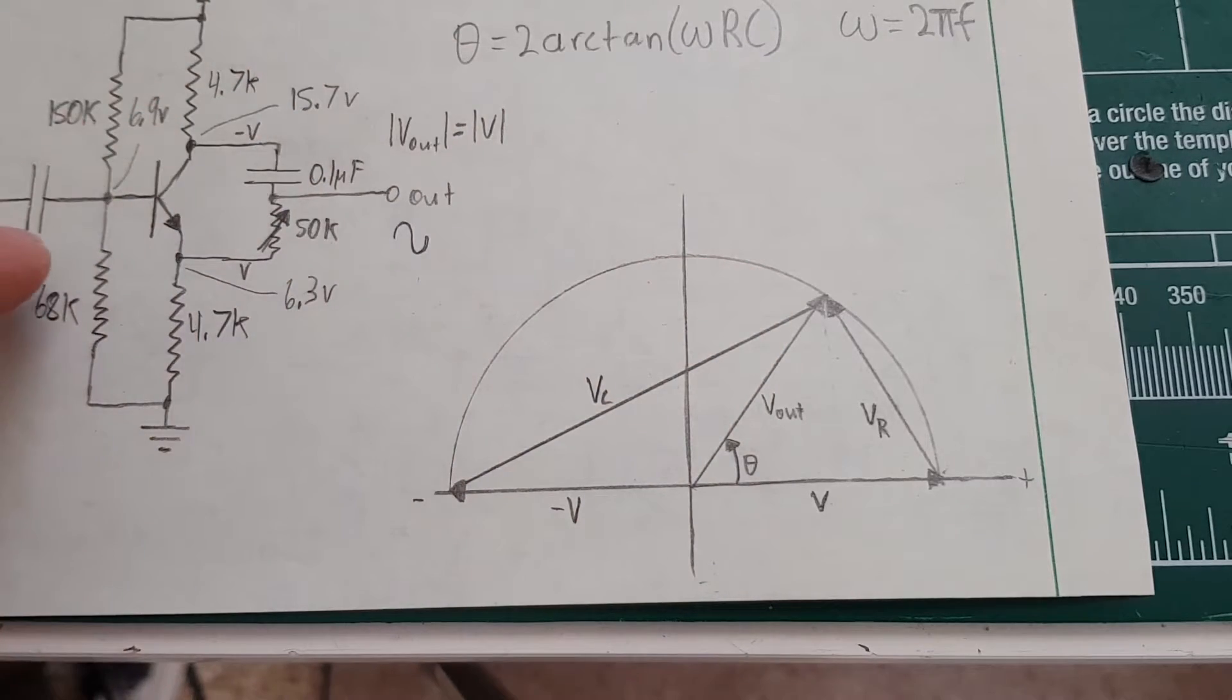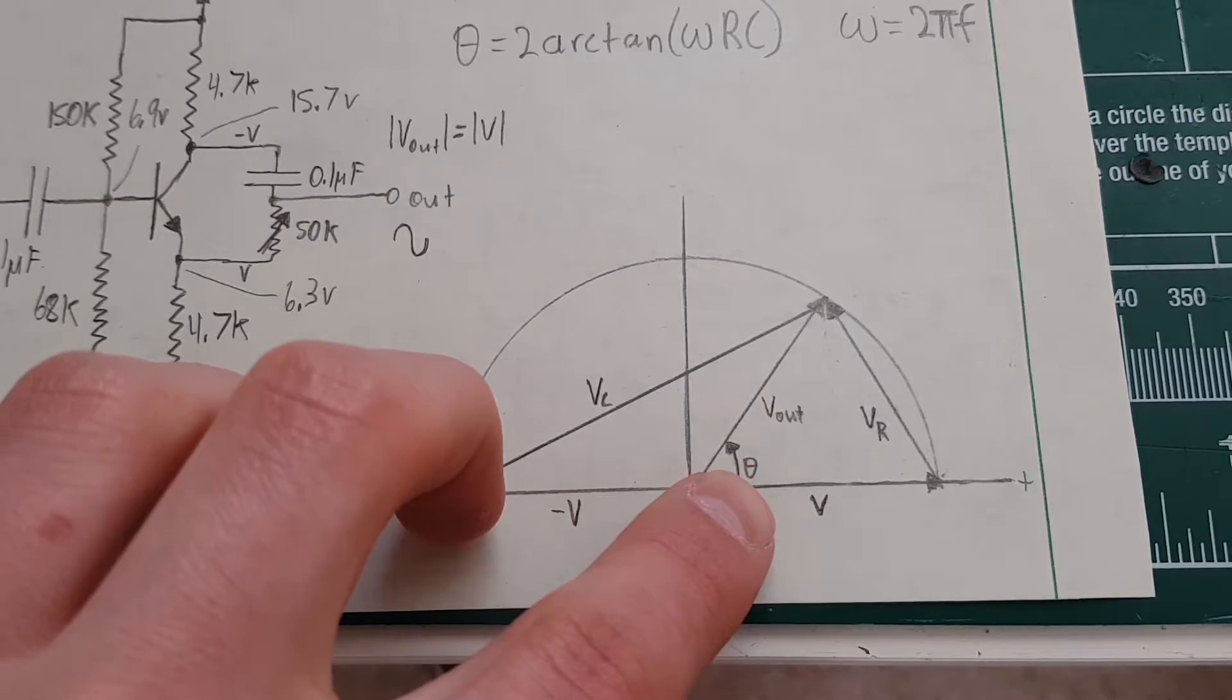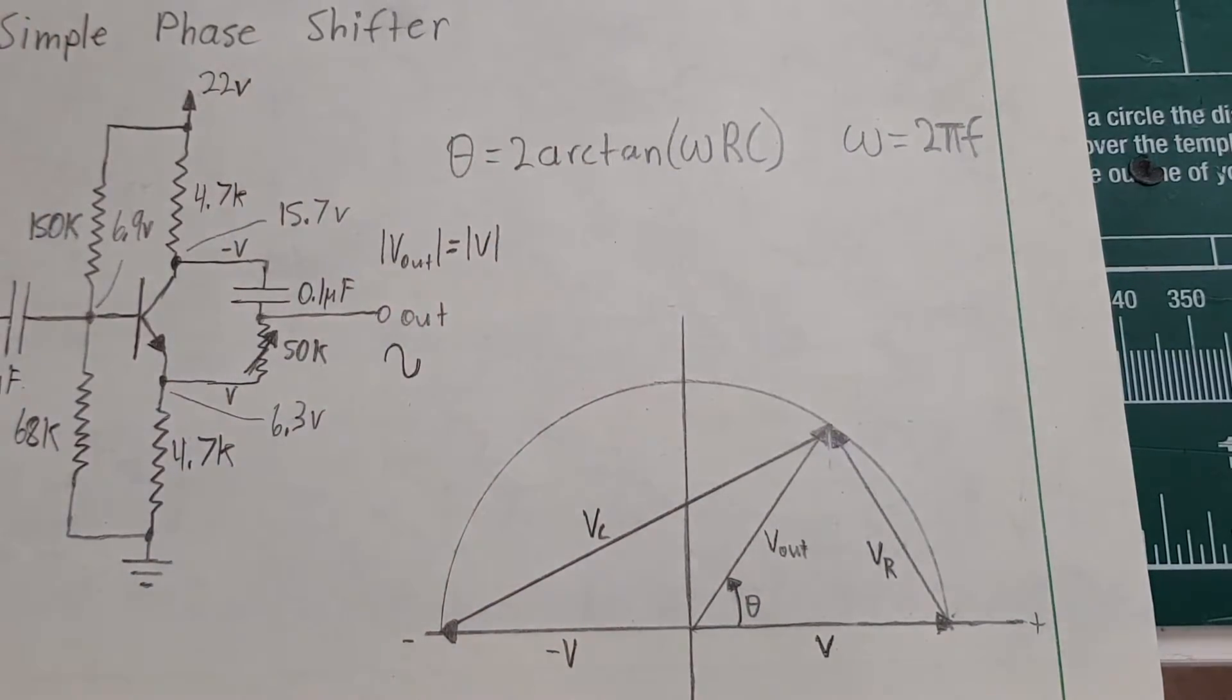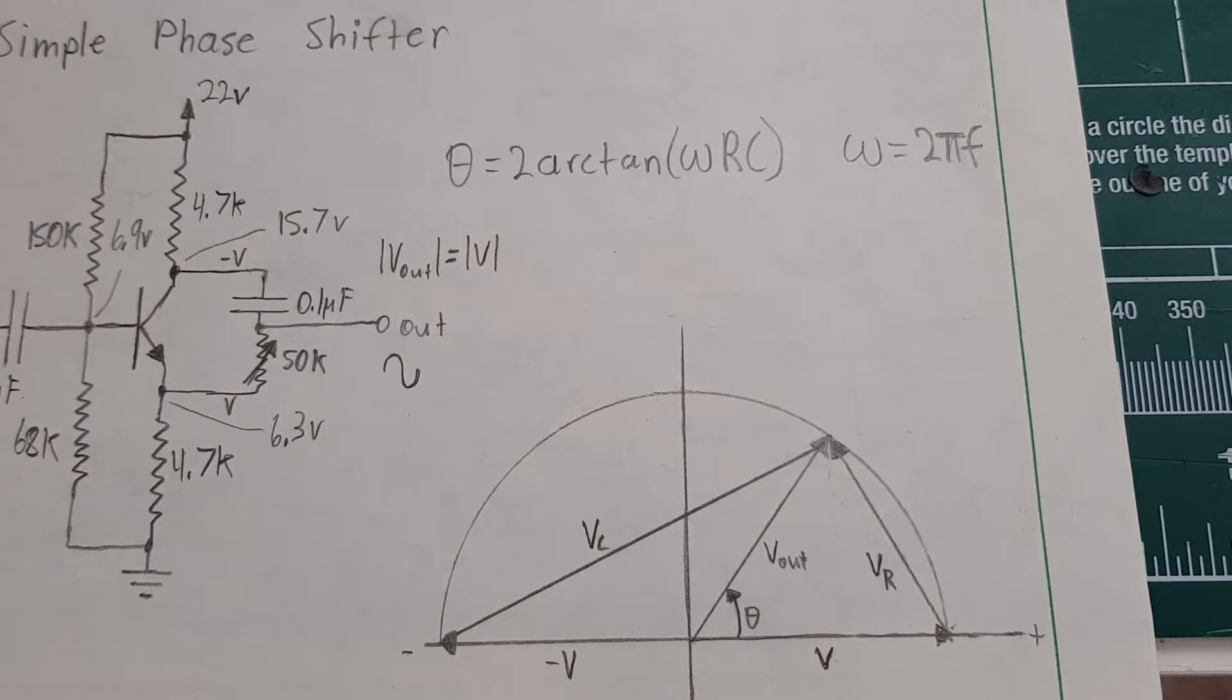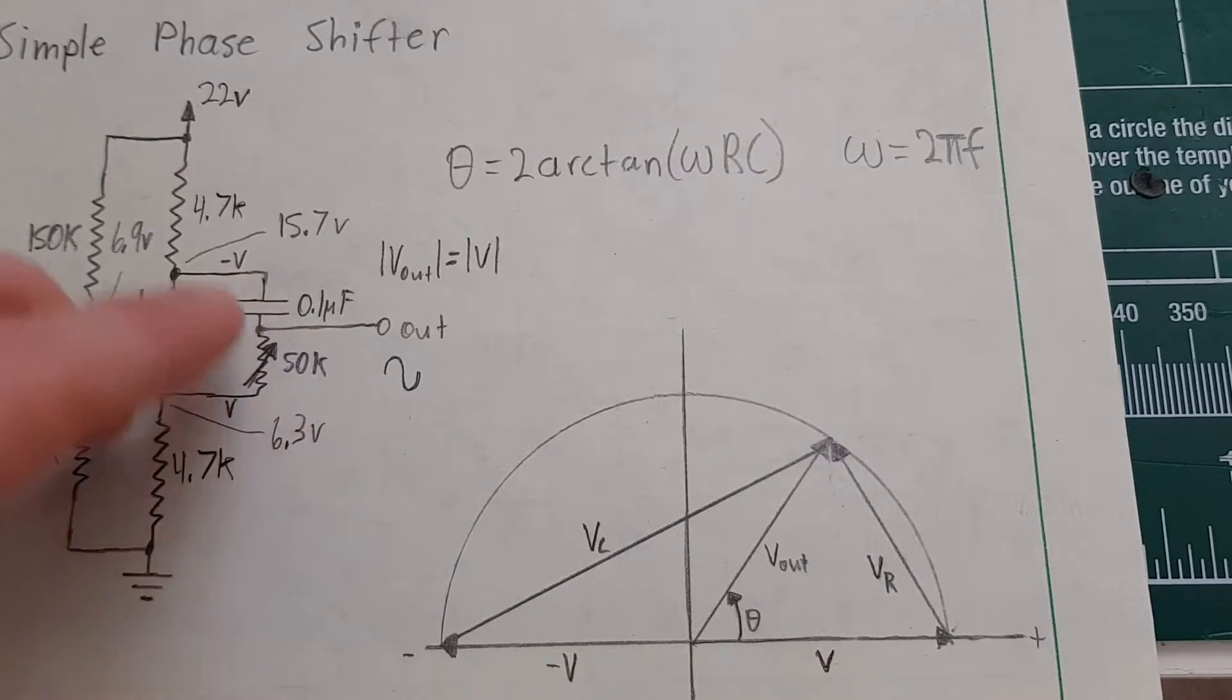The output voltage is just the input voltage, it's just unity. And the phase angle is two times arc tangent of basically the angular frequency times the time constant of R and C.